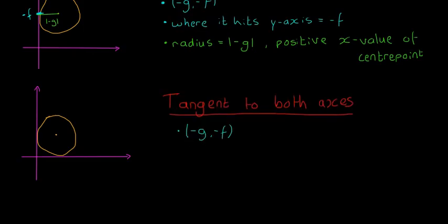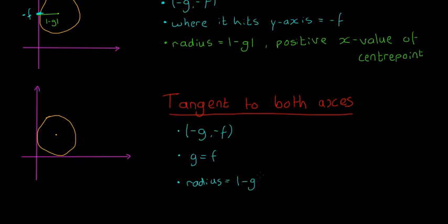The last case is when the circle is tangent to both axes at the same time. The centre point is still (-g, -f), but the most important thing to remember is that g equals f — the circle is the exact same distance from the y-axis as it is from the x-axis. The radius equals the modulus of -g and also the modulus of -f, since both distances are exactly the same.